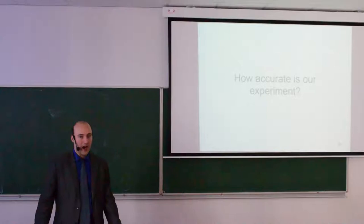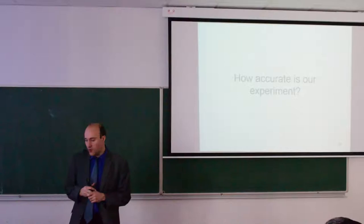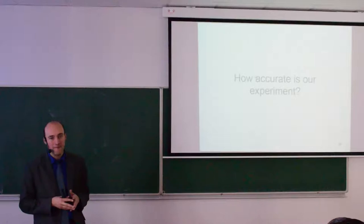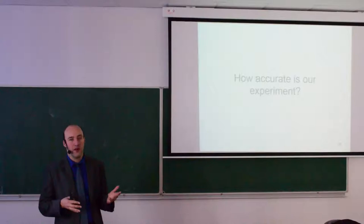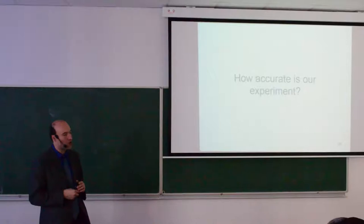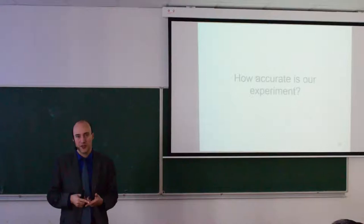A very important question is how accurate is our experiment and how accurate is the reading from our instruments. Until the end of today's lecture we will discuss two ways to estimate accuracy. One is an older way using absolute and relative error. The other, from about 30 years ago, describes accuracy with uncertainty. I will start with the historically older one because it is easy to understand and will help us understand the more complicated uncertainties.